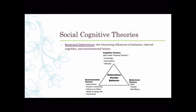Reciprocal determinism says there are a lot of things that determine how you'll behave in a given circumstance: your past behavior, your internal cognition, and environmental factors around you all determine your behavior now. For example, your behavior in past relationships influences how you behave in current ones; your thoughts about a relationship affect how you act in it; and environmental factors like social norms or proximity to the person you're dating also influence your behavior. It's all of these things interacting.